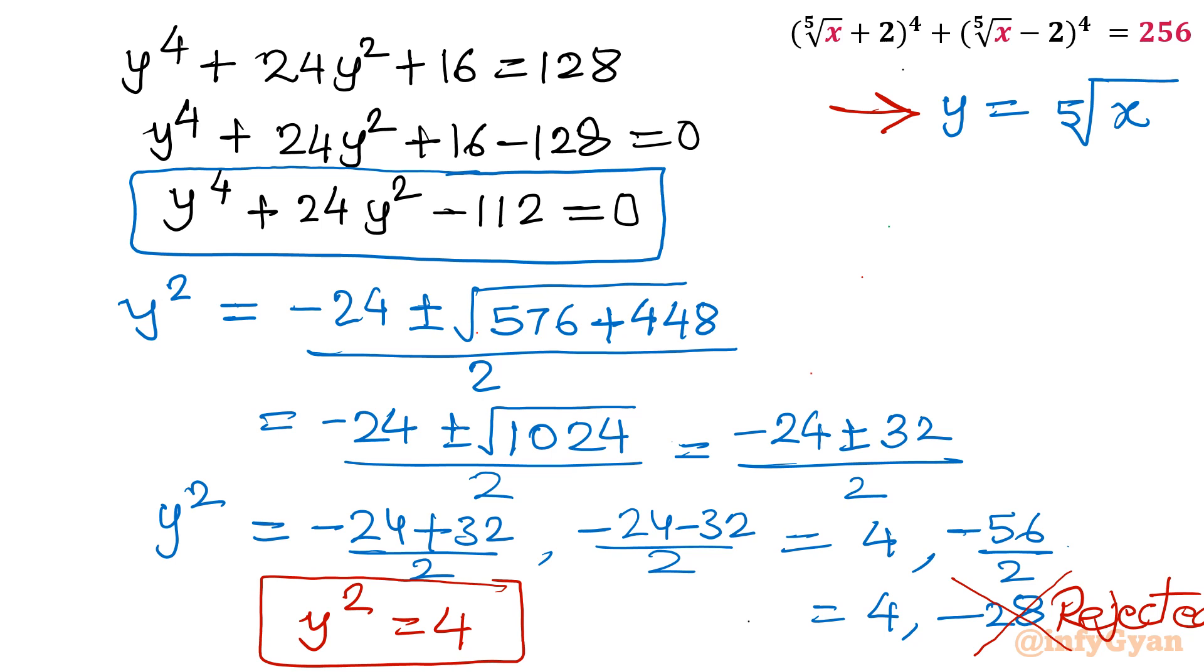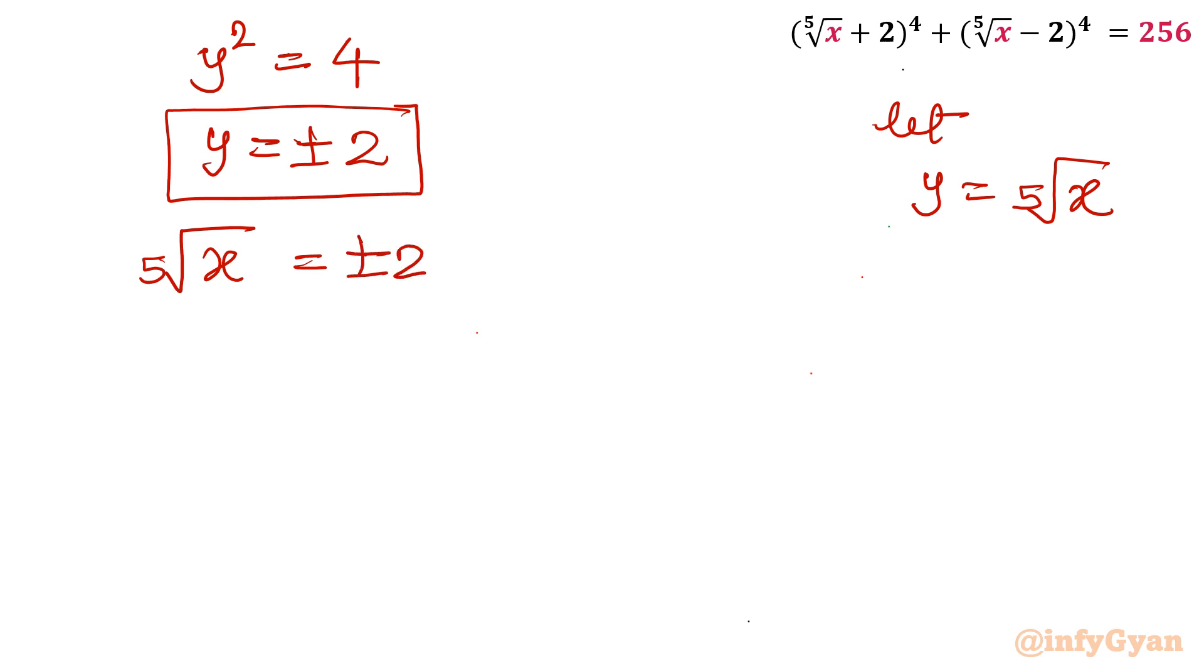Remember our substitution was y equal to fifth root of x. Now y square is equal to 4. Take square root both sides, so y will be equal to plus minus 2. Now our substitution was y is equal to fifth root of x. Let me substitute here, so fifth root of x equal to plus minus 2. Raise both sides power 5, so left hand side it would be x only and right hand side 2 raised to the power 5 is 32, so plus minus 32.